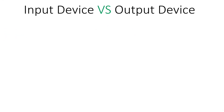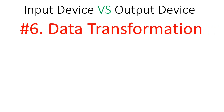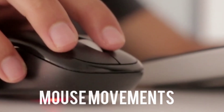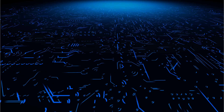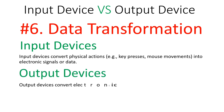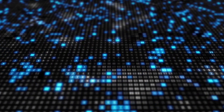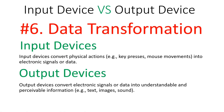For data transformation, input devices convert physical actions — like key presses and mouse movements — into electrical signals or data. Output devices convert electronic signals or data into understandable, perceivable information such as text, images, and sounds.